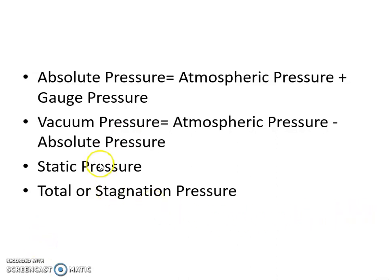Now let us define two types of pressures: static pressure and total or stagnation pressure. Static pressure is defined as the force per unit area acting on the wall by a fluid at rest or flowing parallel to the wall in a pipeline. The pressure exerted by water flowing parallel to the wall of a pipeline is called as static pressure. Stagnation pressure is defined as the pressure that would be obtained if the fluid stream were brought to rest. If the flowing fluid is brought to rest suddenly, then the pressure exerted by that fluid is called as stagnation pressure or total pressure.